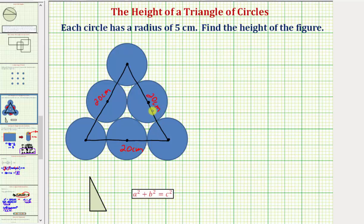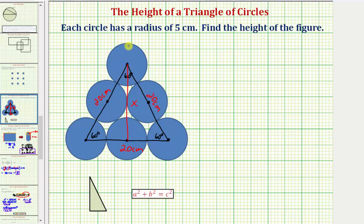So all the sides have the same length, and all the angles have the same measure — therefore the interior angles measure sixty degrees. Notice the height of this triangle would be this length here, which we need in order to determine the height of the entire figure. So if we label this length x, notice how x plus the radius of the top circle, which is five centimeters, plus the radius of the bottom circle, which is also five centimeters, gives us the height of the figure.